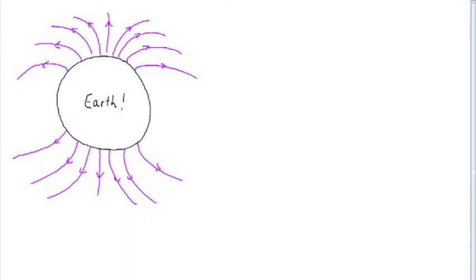The earth is a giant magnet. We use the magnetic field of the earth to find our way around using a compass.